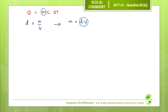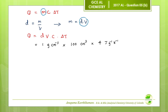Now we can write the new equation: Q = dV × c × ΔT. Density = 1 g/cm³, volume = 100 cm³, specific heat capacity = 4 J/g/K, and temperature change = 5 K. The answer is 2,000 joules. We have to express the enthalpy change in kilojoules per mole, so we convert: 2,000 ÷ 1,000 = 2 kilojoules.